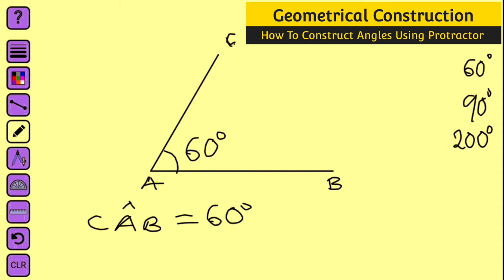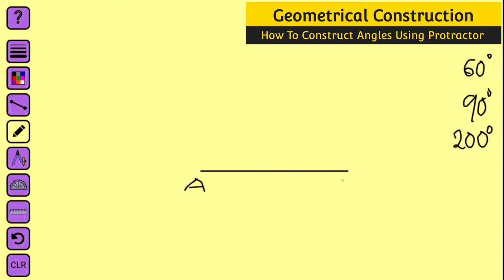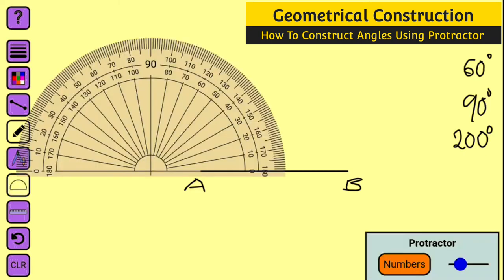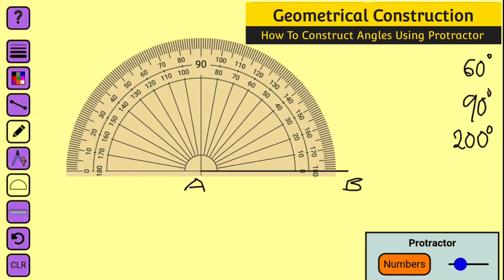Now let us construct angle 90 degrees. Draw a straight line and label it as A and B. Still, I will be using A as my origin. Bring your protractor and place it on A such that point A will lie exactly on the point of intersection between 90 degrees and 180 or 0 degrees on my protractor.